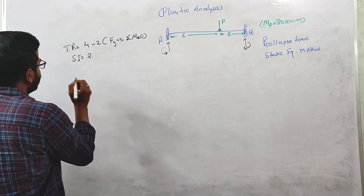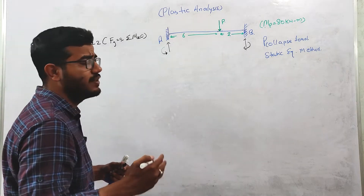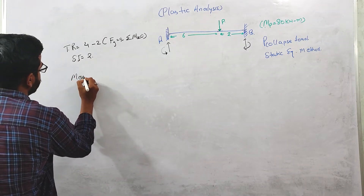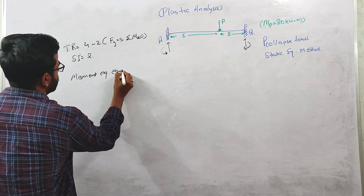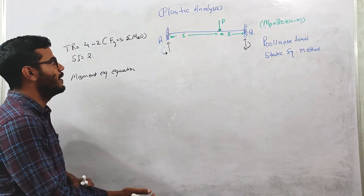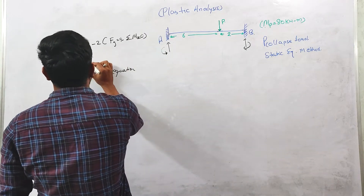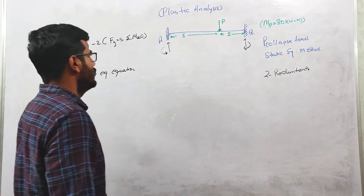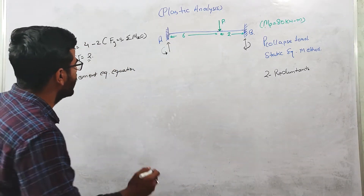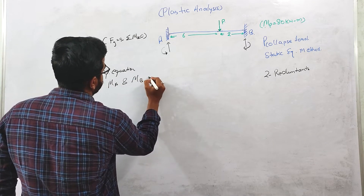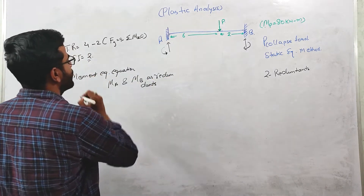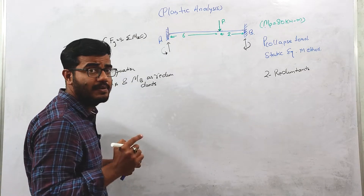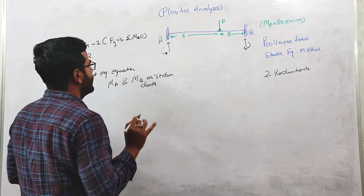Next step is to calculate the moment equilibrium equation for this loading system on this beam. We need to form the moment equilibrium equation. The static indeterminacy is two, so we will have two redundants. I am taking Ma and Mb as redundants because the static indeterminacy of this beam is two.